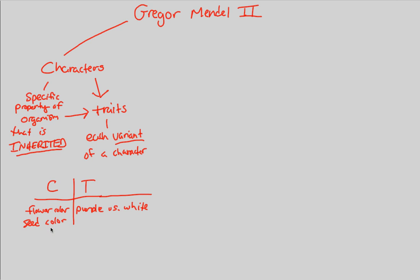Another one that Mendel saw was seed color. Again, remember, the advantages of the pea plant was that the simple characteristics are easily identifiable and observable. Color is very easy to see the difference between purple and white. Seed color, it's very easy to see the difference between the two character traits of yellow versus green. So this is the idea that Mendel established.